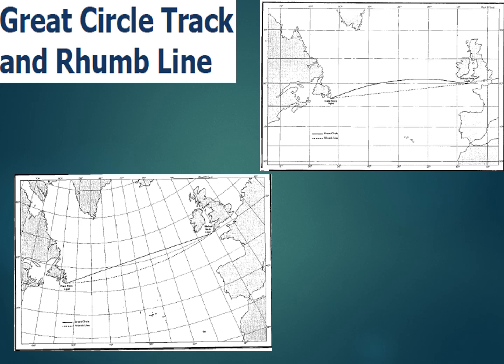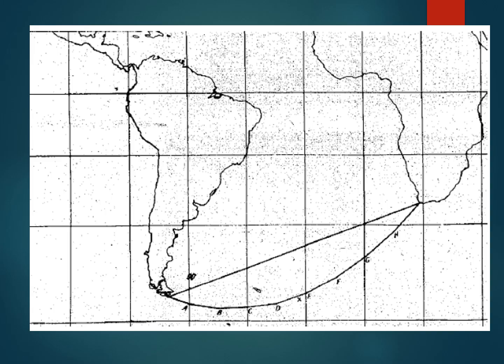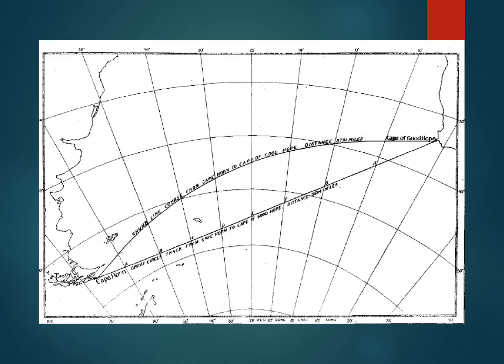The advantages of gnomonic charts are that all areas of the world including polar regions are represented, and great circle courses can be easily laid off. They are small-scale charts covering much larger areas of the earth. The disadvantage is that you cannot use them for navigation and rhumb line courses cannot be drawn. On a Mercator chart, you can recognize it because the meridians appear as parallel and equidistant lines. On gnomonic charts, the meridians are not parallel or equidistant — they are a projection of the earth's surface.